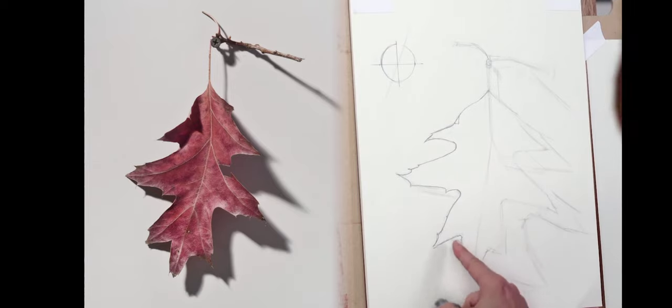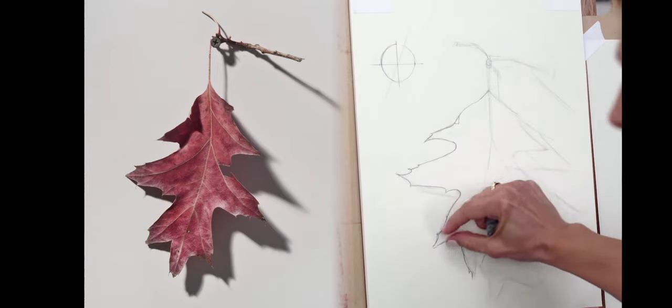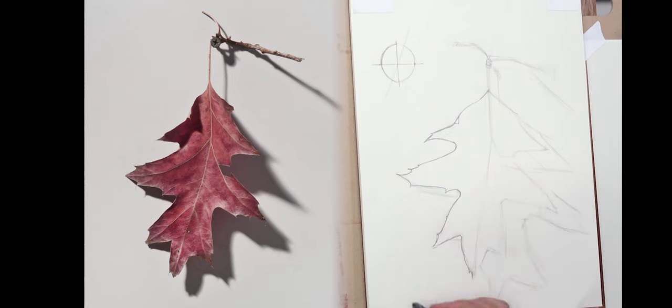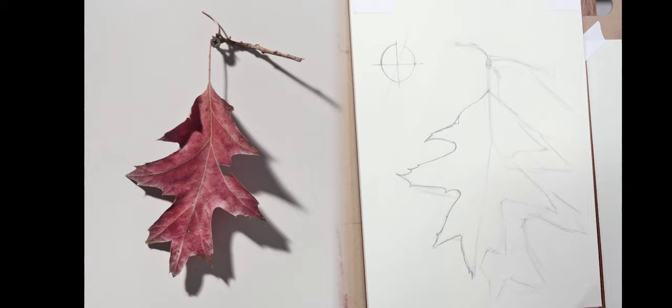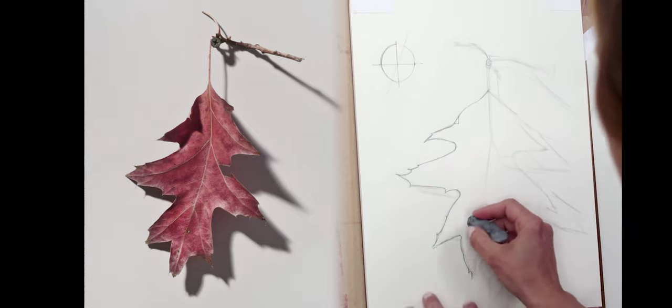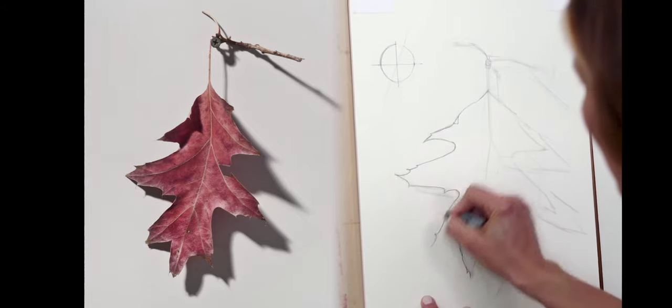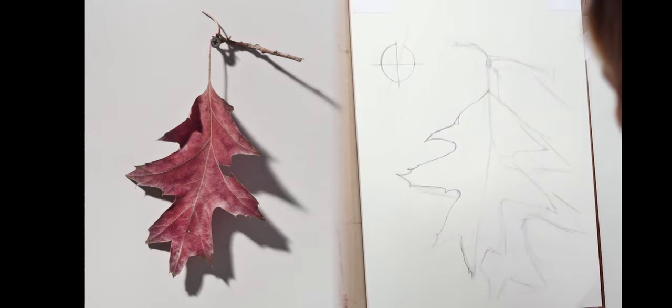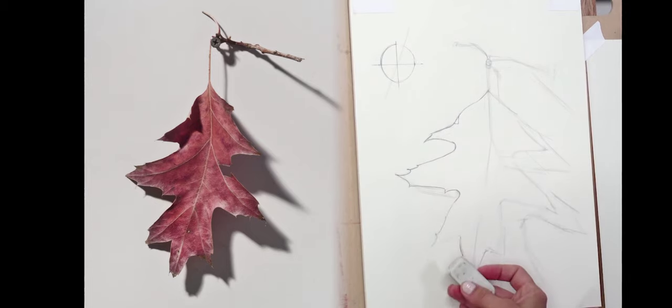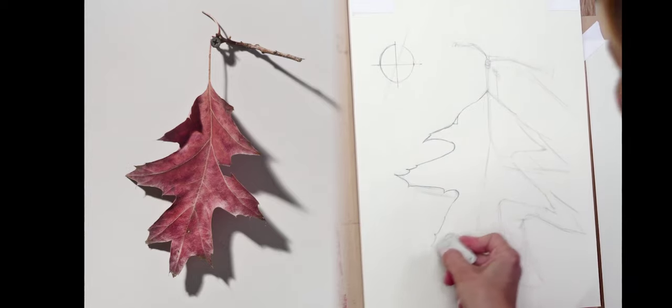So here I'm noticing that I've made this lobe of the leaf kind of narrow. And I want to make it a little wider. And look, I kind of noticed that as I was making that detail, I went off the map for my little block in. So what I'm going to do is I'm going to use my kneaded eraser, pull it out, lighten it back up. Actually, I think I'm going to, the white eraser erases more cleanly than the kneaded eraser. So I'm going to take it all the way out.